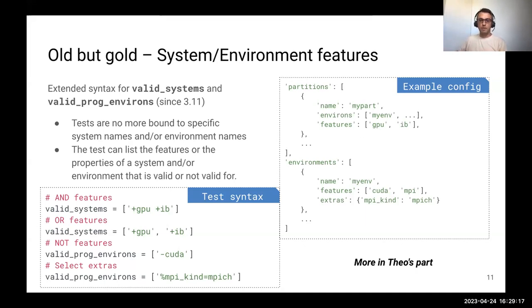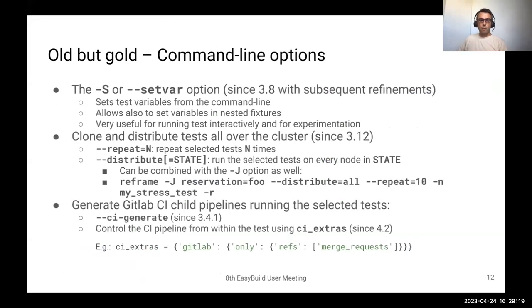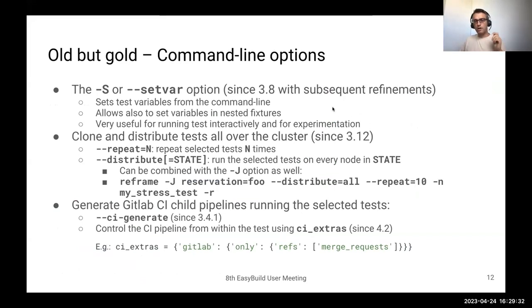The `-S` option for setting test variables from the command line is something I use very often because you can modify the behavior of a test from the command line. This is from 3.8 with subsequent refinements. I totally recommend using variants and using that option.